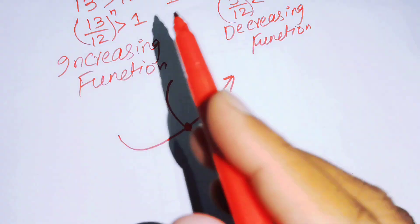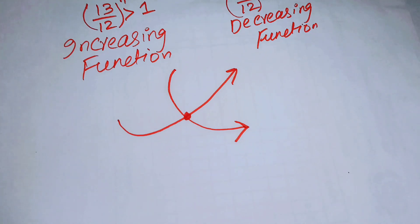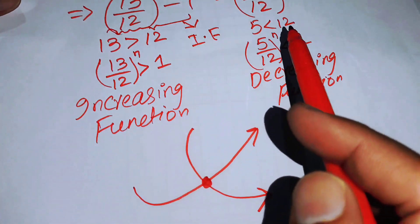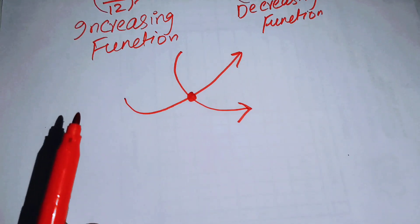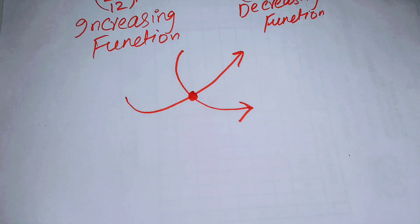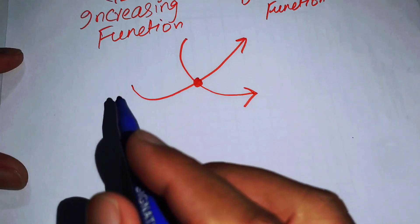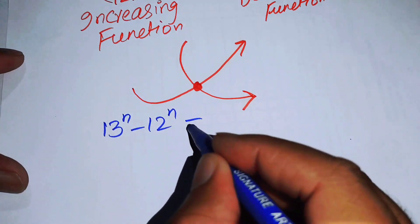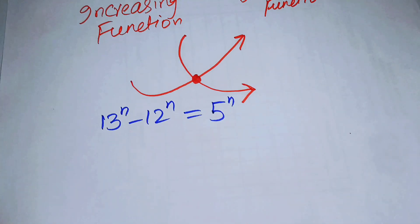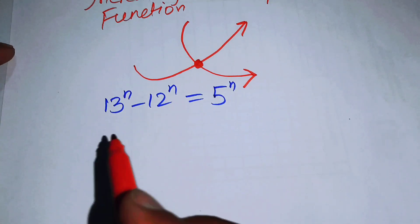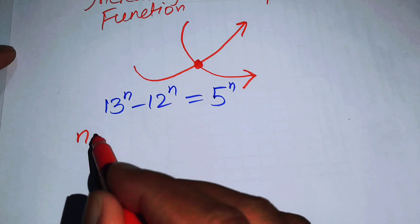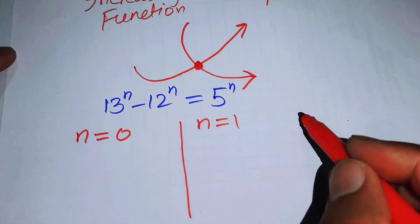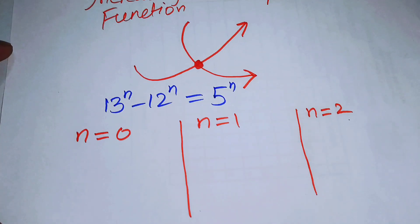Since the left-hand side is increasing and the right-hand side is decreasing, these two functions intersect at a single unique point, which is the solution. We can find this unique point by inspection, checking the original equation 13ⁿ - 12ⁿ = 5ⁿ at different values of n: first at n = 0, then n = 1, and finally n = 2.